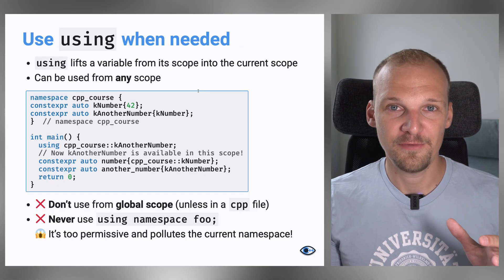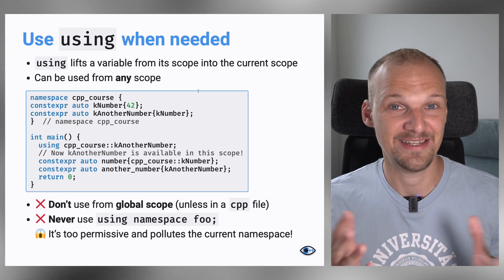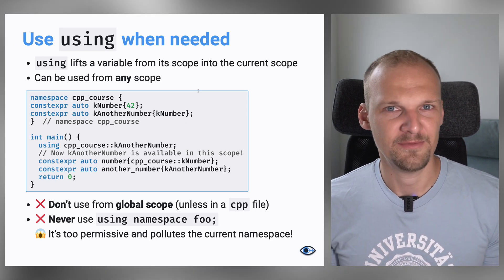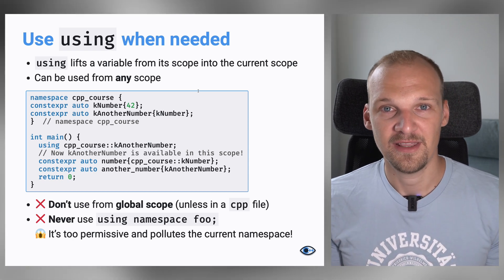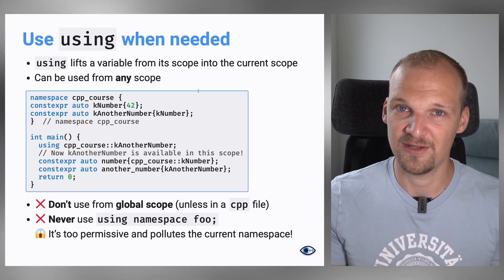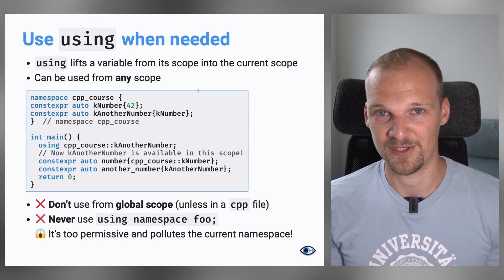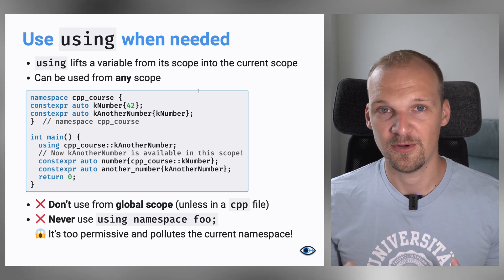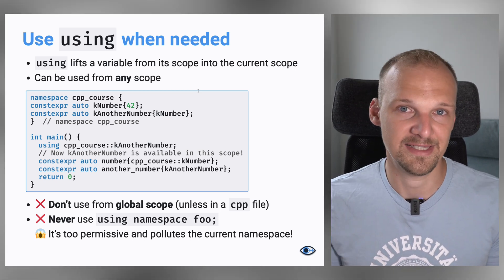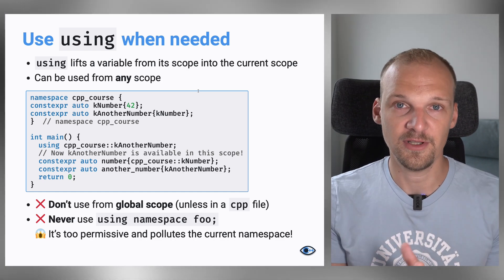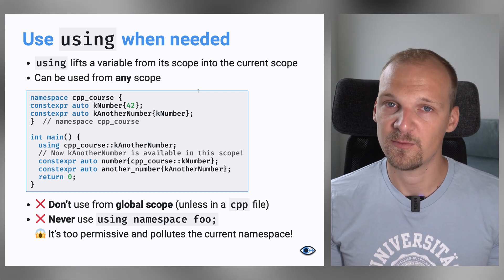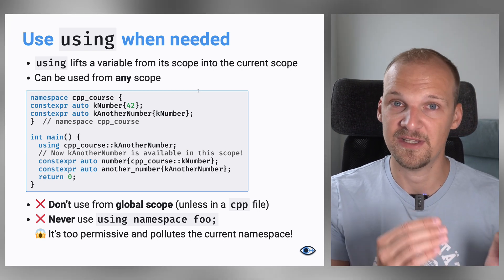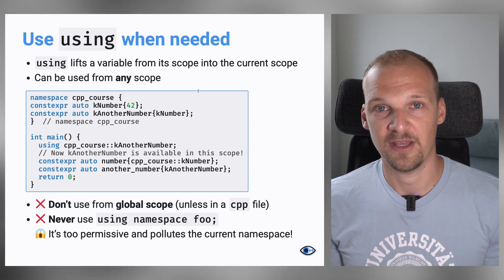If you think that typing out all those double colons and namespace names is tedious — especially when namespaces are nested and names get longer — you're right, it can be tedious. To ease things up, there is the using keyword. Using can be used in more contexts, but today we're covering just this one. Using can be placed in any scope or namespace. For example, inside main, you can say using cpp_course::k_number, and then use it without the namespace specifier. You're explicitly telling the compiler to treat it as if it's in your current scope.